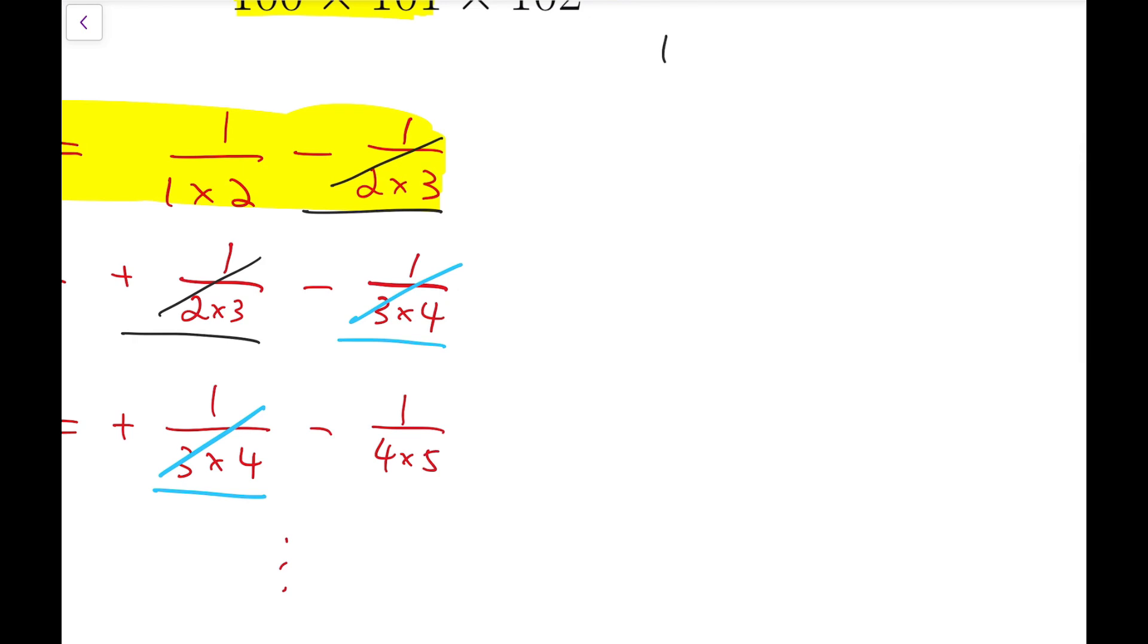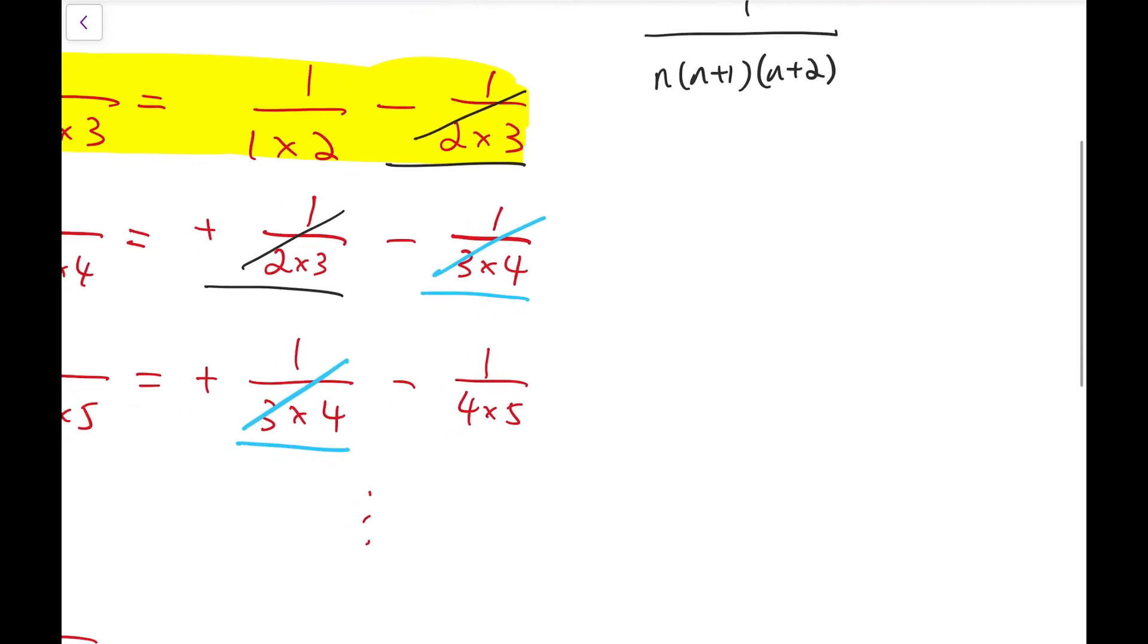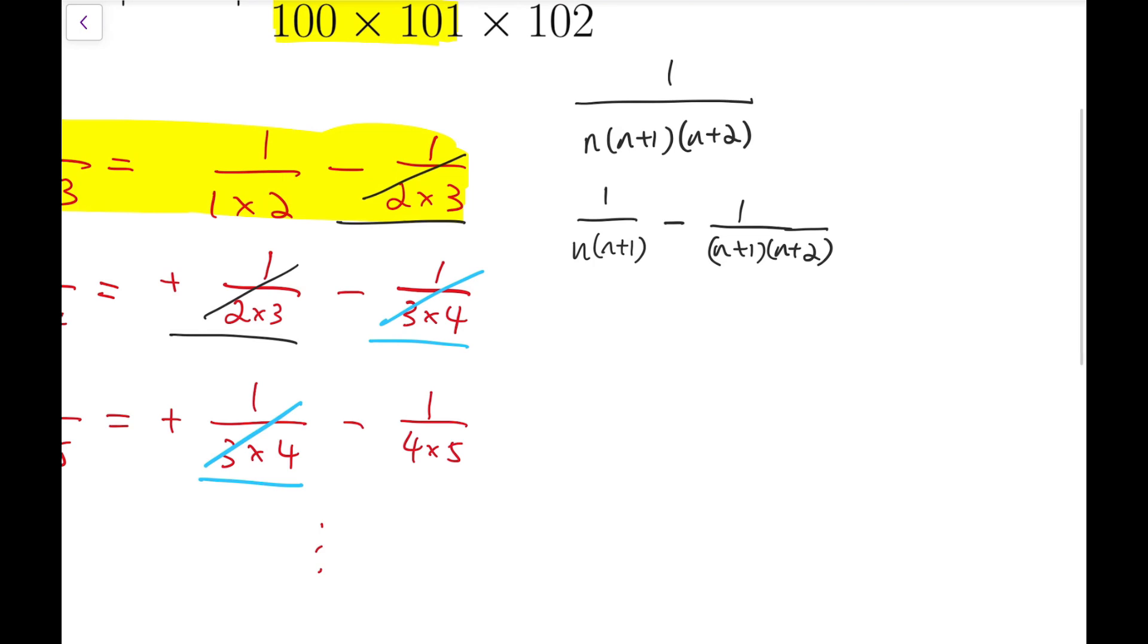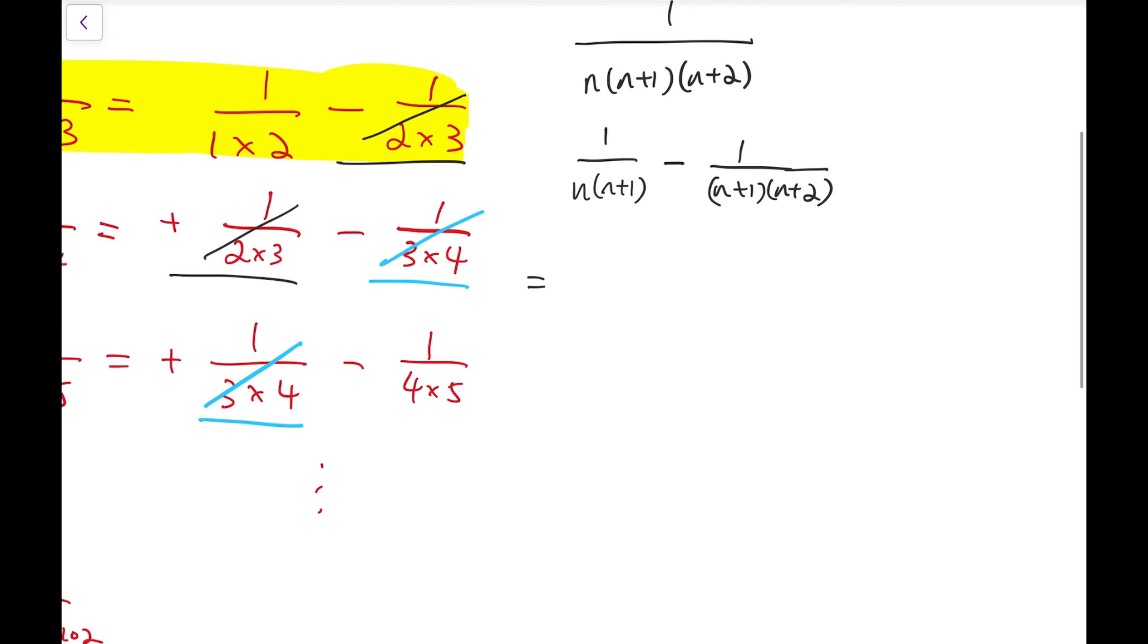Now for the product, 1 over the product of 3 consecutive numbers, I can say this is of the form 1 over n times (n+1) times (n+2). For the splitted version, it is actually of the form 1 over n(n+1) minus 1 over (n+1)(n+2). So let's see whether this really simplifies and gives the fraction above it.